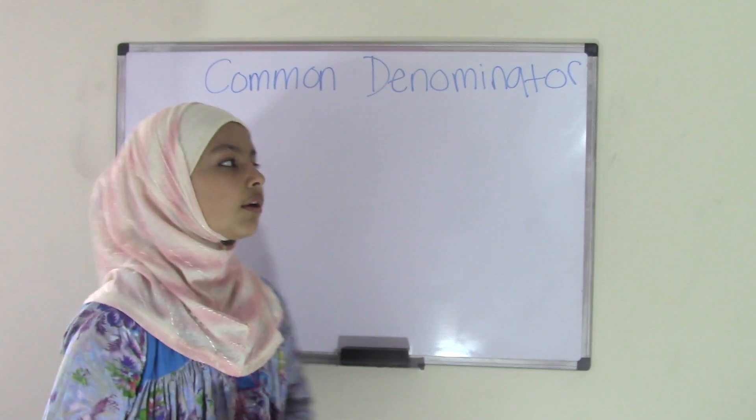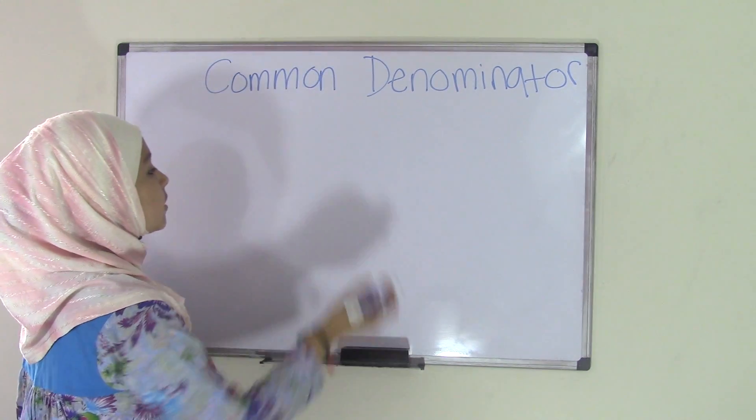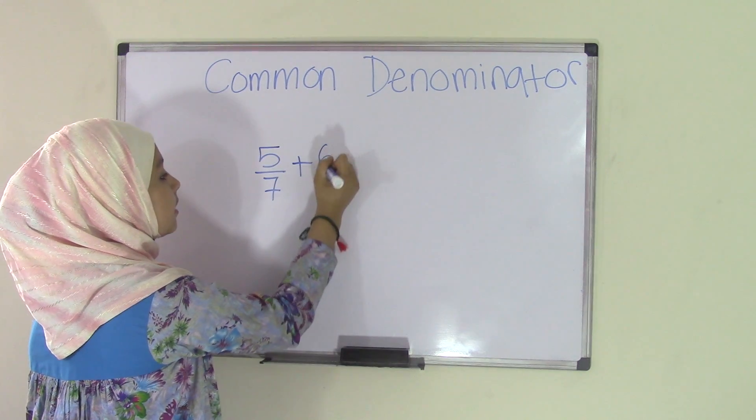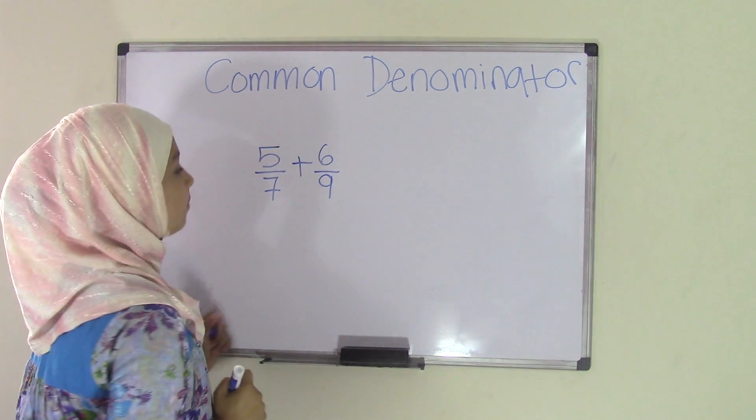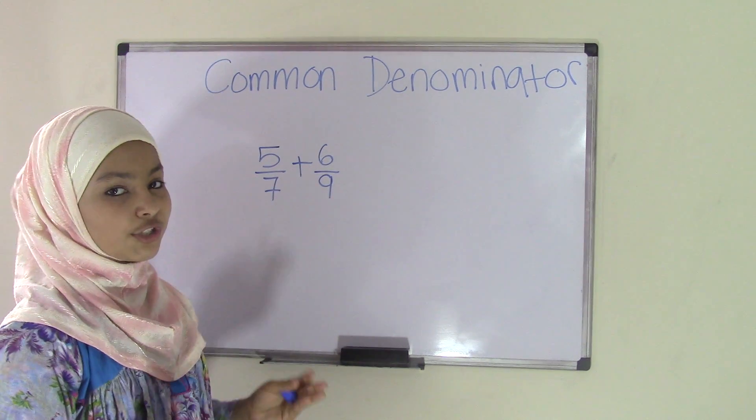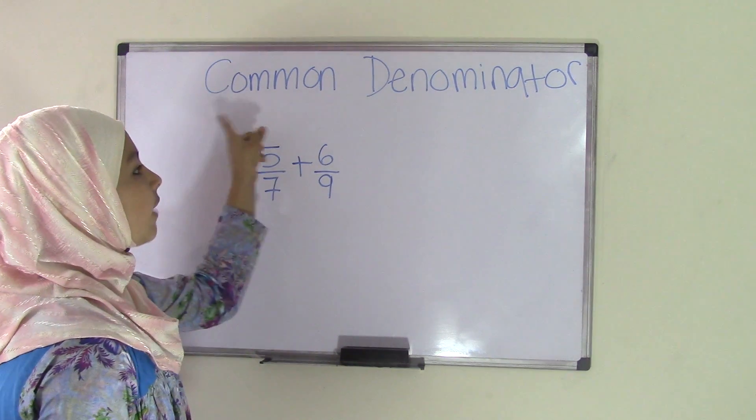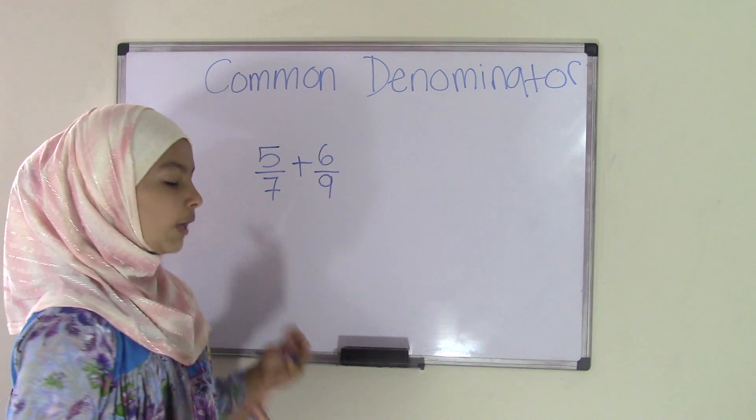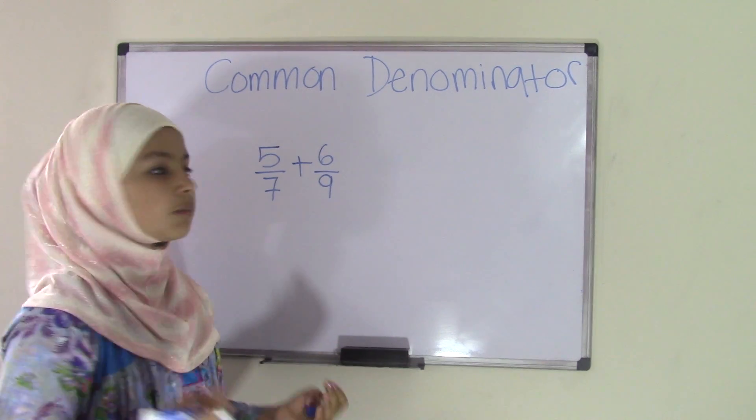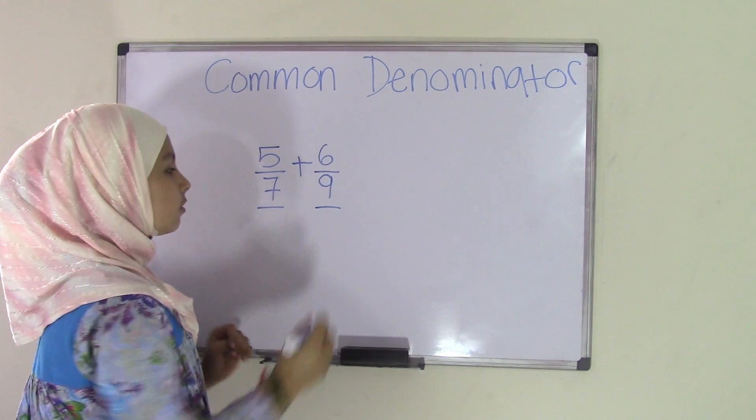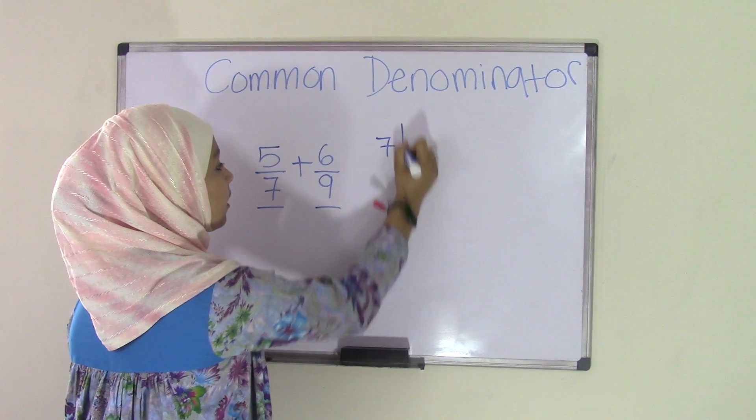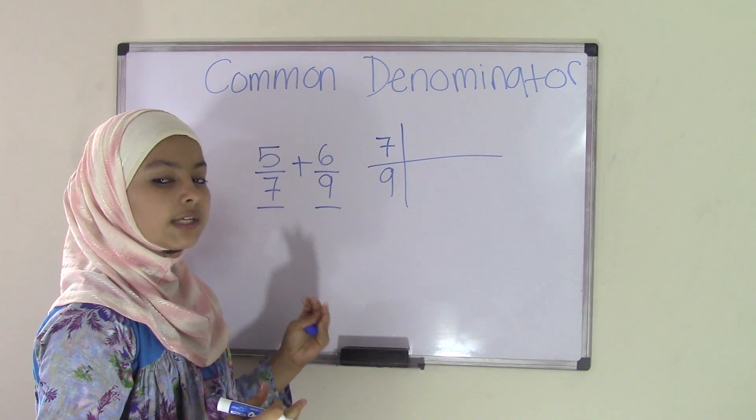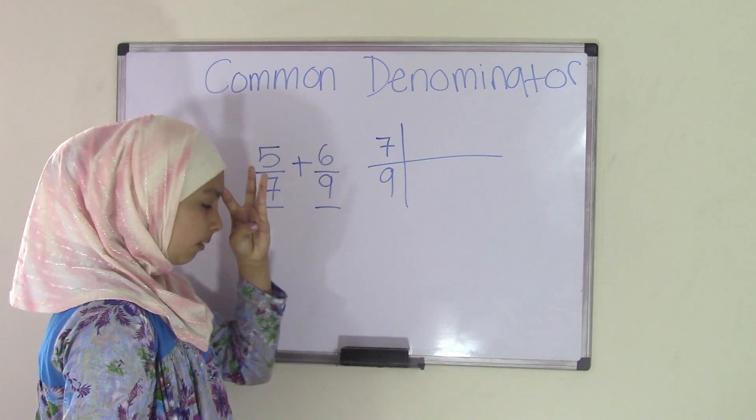So let's say we have fractions such as 5/7 plus 6/9. As you can see, the two denominators, 7 and 9, are different. What you need to do is find the common denominator so that you can add these two fractions. How do you find a common denominator? All you have to do is find the common multiple of these two denominators. So you're going to write 7 and 9, and list the multiples of each until you can find a common multiple.